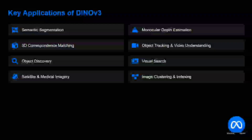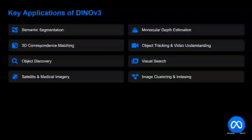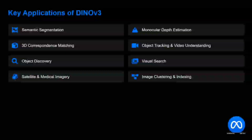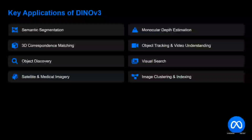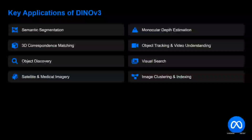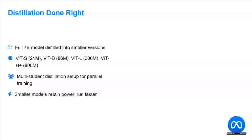Key applications include semantic segmentation, 3D correspondence, object discovery, satellite and medical imagery, monocular depth estimation, object tracking and video understanding, visual search, and image clustering. So for any task related to images, DINOv3 can be your go-to model now.